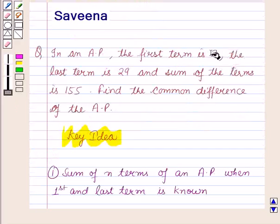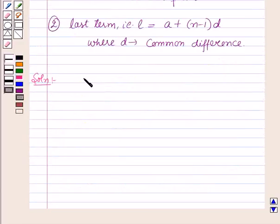Here the first term is given as 2, the last term is 29, and sum of the terms is 155. So it is given: the first term A = 2, the last term L = 29, and the sum of the terms Sn = 155.